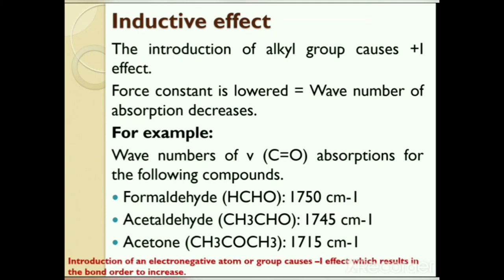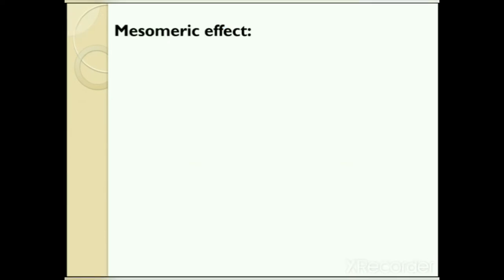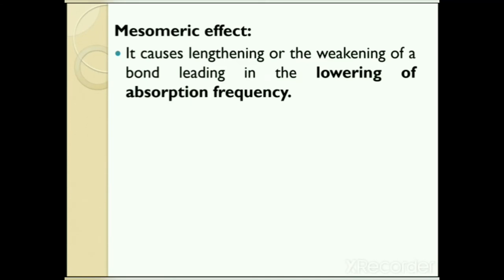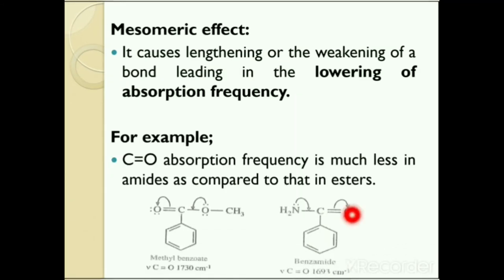Introduction of an electronegative atom or group causes a −I effect, increasing the bond order, raising the force constant and increasing the wave number of absorption. Next is the mesomeric effect, a property of substances or functional groups defined as the polarity produced in the molecule by the interaction of two pi bonds or between a pi bond and a lone pair of electrons on an adjacent atom. The mesomeric effect causes lengthening or weakening of a bond, lowering the absorption frequency. For example, C=O absorption frequency in benzamide is much less than in methyl benzoate, because the electron pair on nitrogen in the amide participates more in conjugation, reducing the C=O frequency compared to esters.